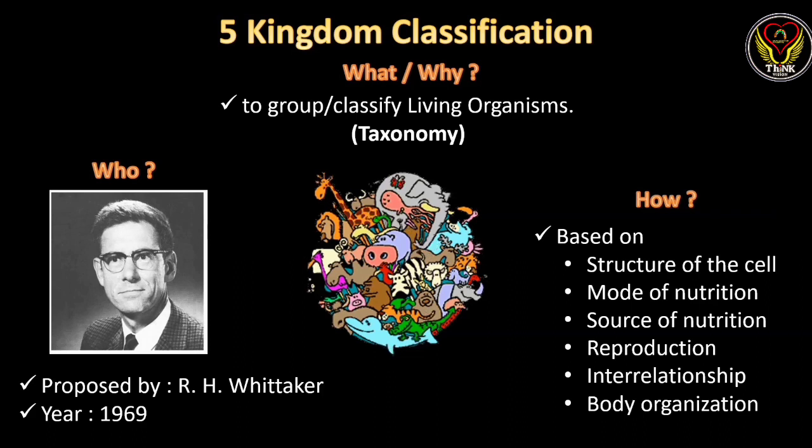This five kingdom classification was introduced by R.H. Whittaker in 1969, based on the structure of the cell, mode of nutrition, source of nutrition, reproduction, interrelationship and body organization.